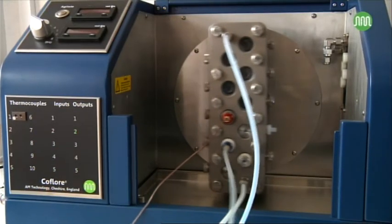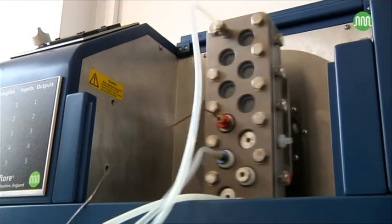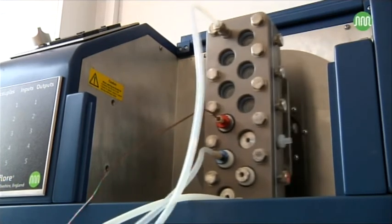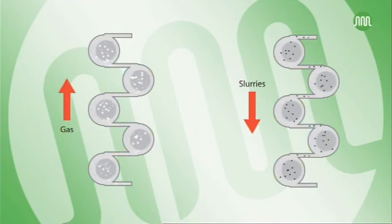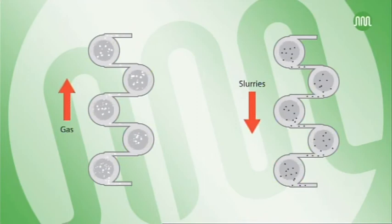The Coflore ACR is designed for continuous operation and provides a cost-effective way of employing a high number of mixed stages. The standard system has ten stages, and mixing is generated by loose agitators which move when the reactor block is subjected to horizontal oscillation. This generates efficient mixing without the need for multiple drive shafts, baffles, or mechanical seals. The reaction stages are arranged in a vertical cascade with short, straight inter-stage channels. This geometry is ideal for handling difficult materials such as gases and slurries.